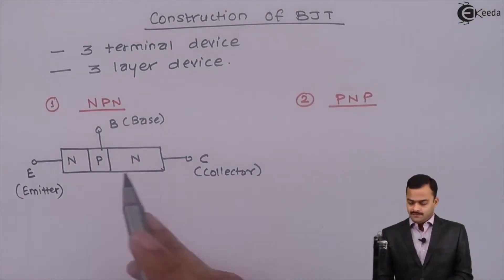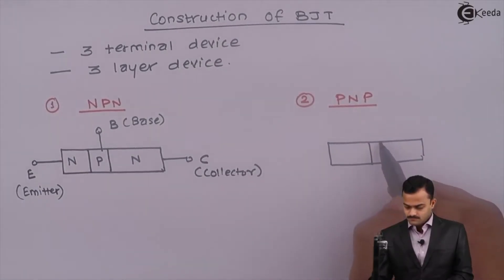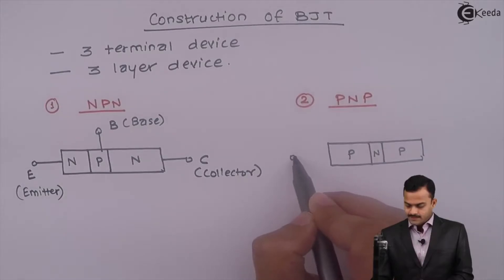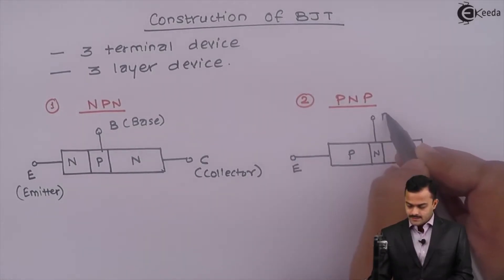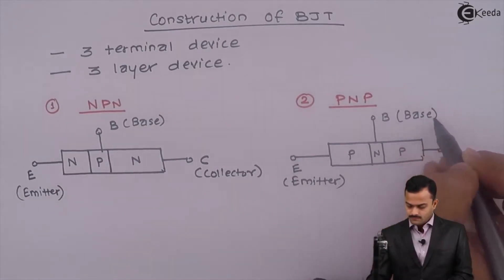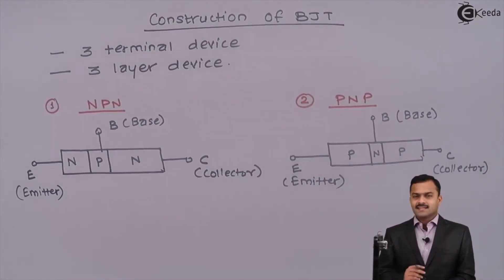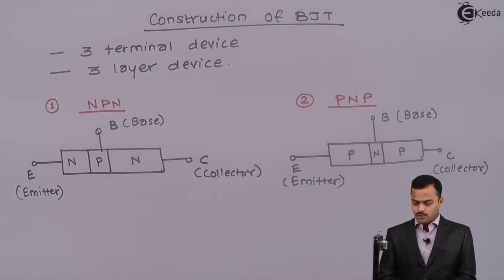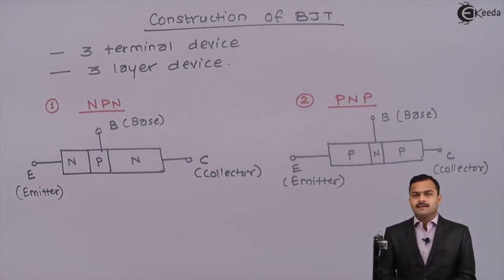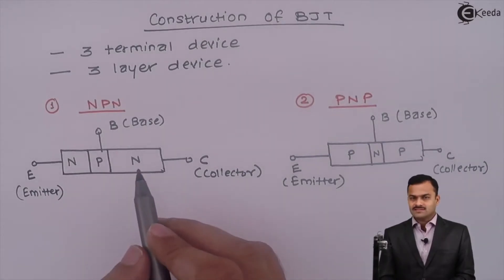Whereas PNP will be like this. Again, three terminals are Emitter, Base, and Collector. Now, certain things we need to remember. All these three are extrinsic semiconductors. Therefore, here it is N-type, P-type, and once again N-type.